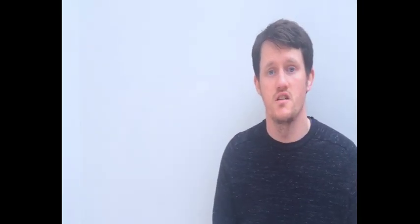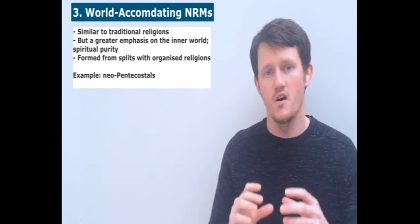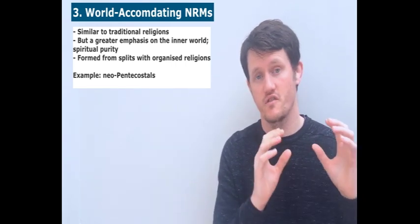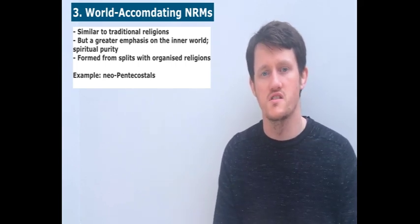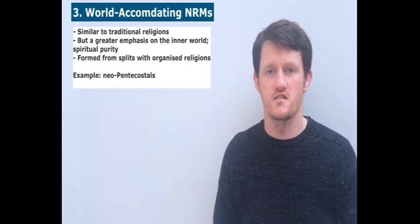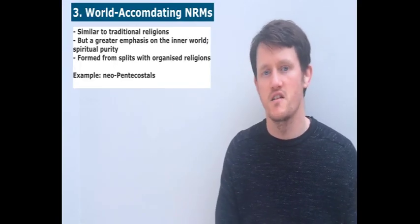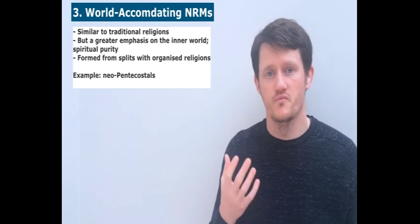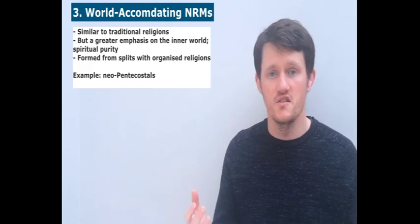The final classification is world accommodating. World accommodating groups are religious organisations that have formed out of a previous religious organisation — for example, a church — and they feel that that church has lost its spiritual purity or is missing some part of the message they need to focus on. World accommodating groups tend to focus on the individual personal connection with the Holy Spirit, or God, or whatever figure they feel they have been missing in their mainstream religion. People following this type of organisation tend to lead very conventional lives, so their view of society will be fairly neutral.